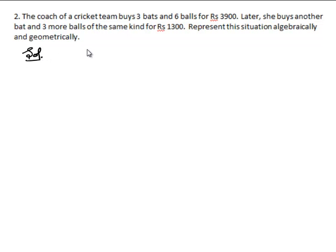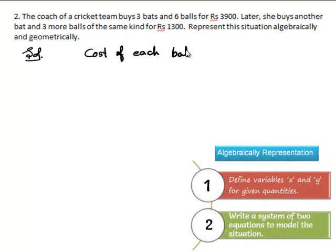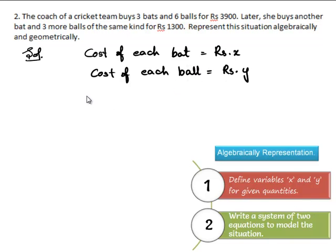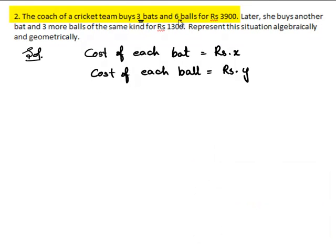Let us assume that the cost of each bat is equal to Rs. X and the cost of each ball is equal to Rs. Y. According to the given condition, the cost of 3 bats and 6 balls is Rs. 3900. So, the cost of 3 bats can be written as 3X and the cost of 6 balls as 6Y, and the total cost is Rs. 3900.